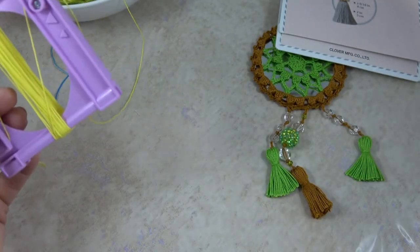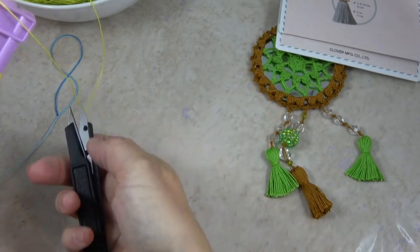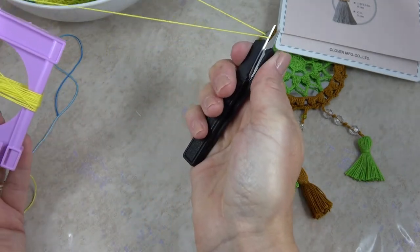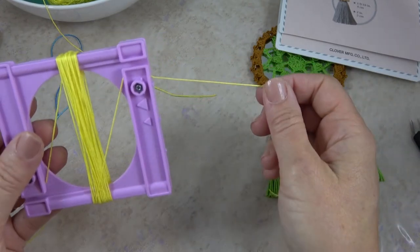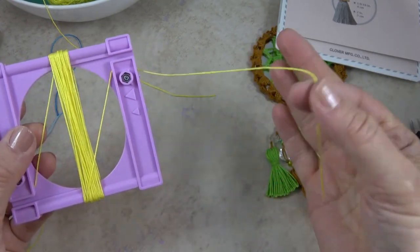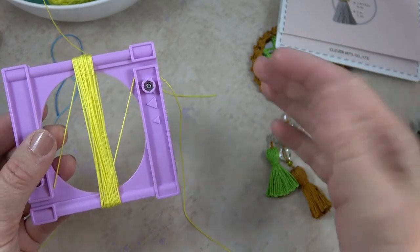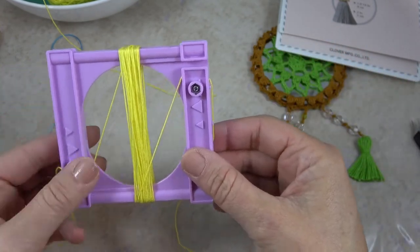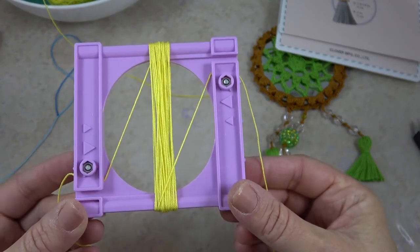And what I discovered is if I cut this length a little bit longer than necessary, maybe about 8 to 10 inches, later on once I've trimmed the tassel this will be an extra that I can use to help me in finishing the tassel, you'll see. So this is how your tassel maker should look.